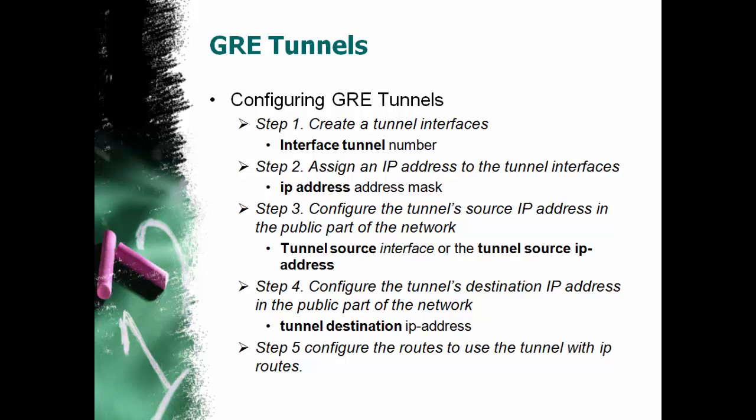The third step, once you've got your tunnel created, is to configure the tunnel source IP address in the public part of the network. The command for that would be 'tunnel source,' and then you could reference the interface — for example, 's0/0/0' — or you could say 'tunnel source' and the IP address. This is going to be the IP address of your interface that connects you to the public internet.